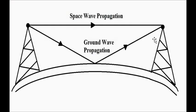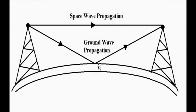To understand these two modes: in ground wave propagation, the signal strikes the surface of the earth, gets reflected, and reaches the receiving station through multiple such reflections. In space wave propagation, or line-of-sight propagation, the signal travels from the transmitter to the receiver in straight line paths — meaning both stations are in visible line of sight of each other.